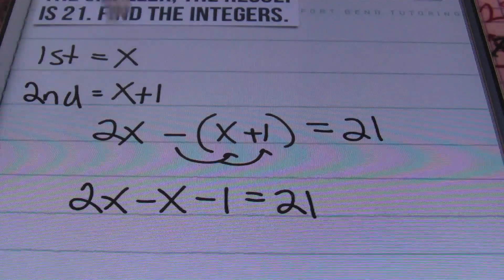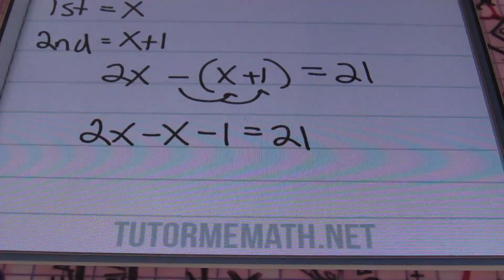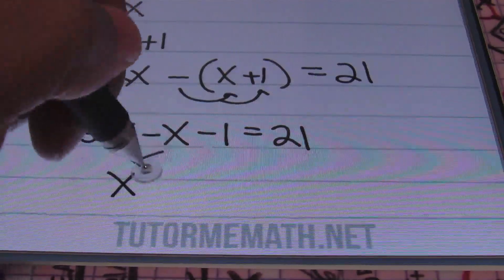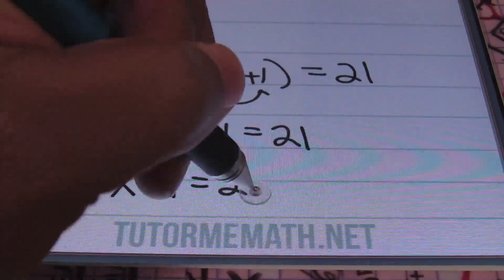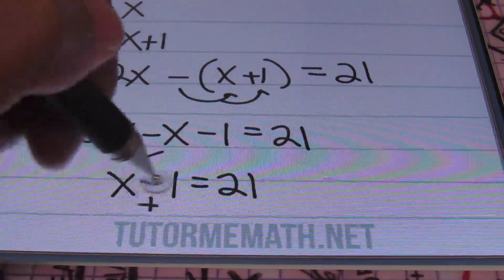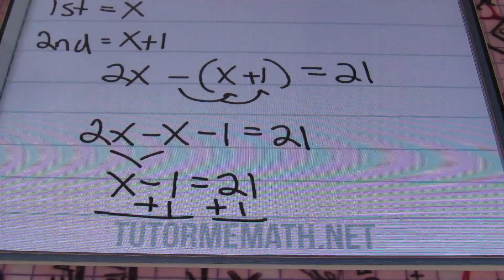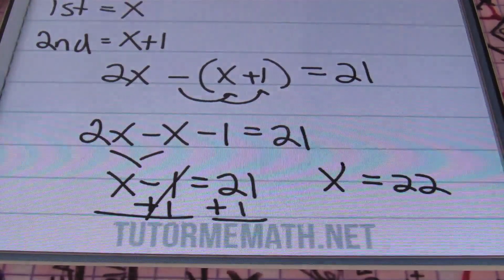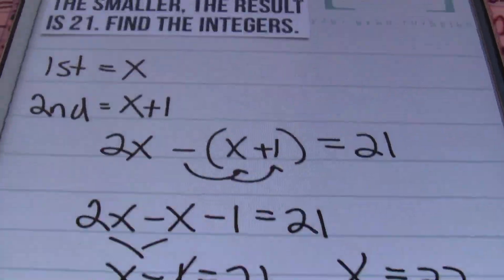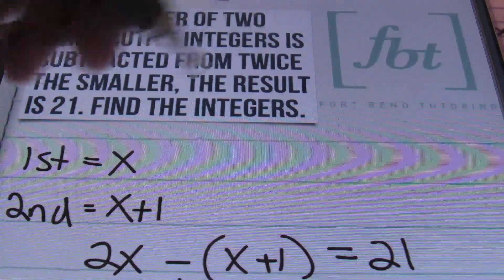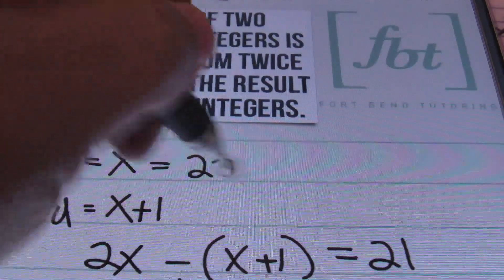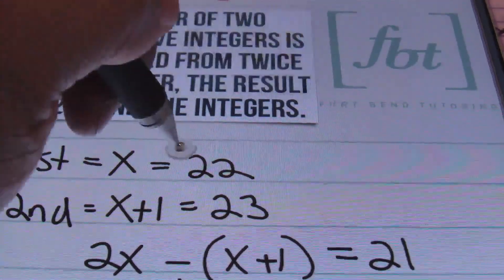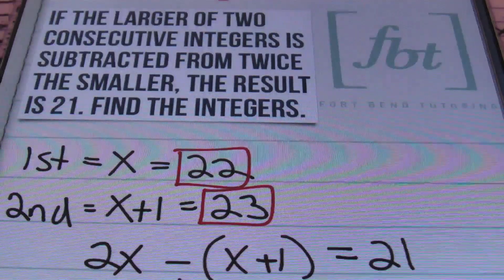Remember that negative in front of the parentheses is negative one, being multiplied times everything inside. My next step is to combine like terms: 2x minus x gives me x. So now we have x minus 1 equals 21. From there, I add one to both sides of the equal sign, giving me x equals 22. Going back to where we had our two integers defined, x equals 22 and x plus 1 would be 23, and that is the solution to the problem.